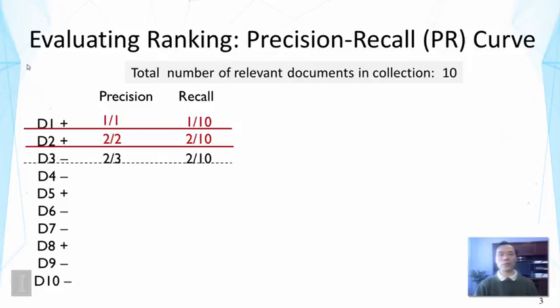When would we see another point where the recall would be different? If you look down the list, it won't happen until we have seen another relevant document. In this case, D5. At that point, the recall is increased to three out of ten. And the precision is three out of five. If we keep doing this, we can also get to D8. And then we will have a precision of four out of eight. Because there are eight documents and four of them are relevant. And the recall is four out of ten.